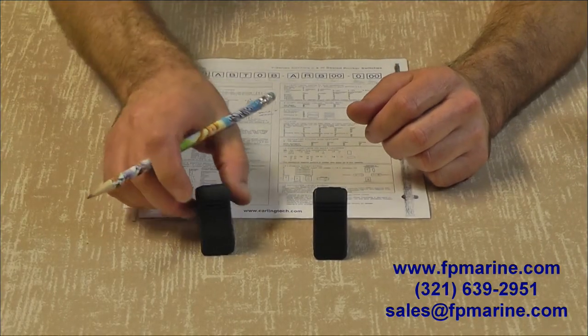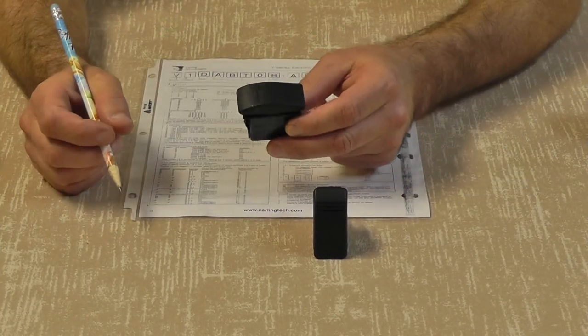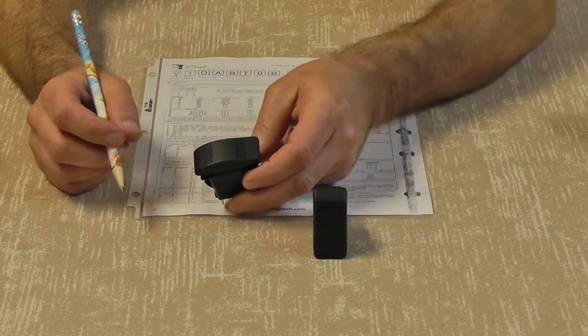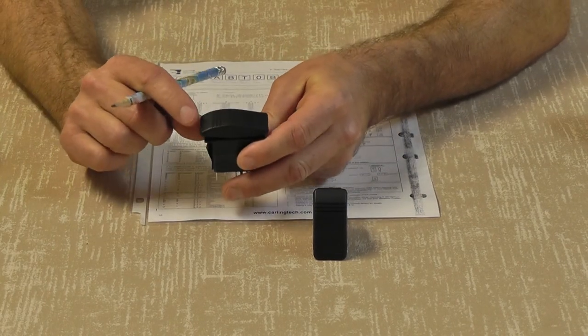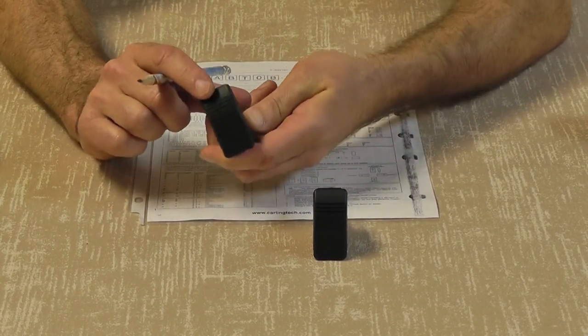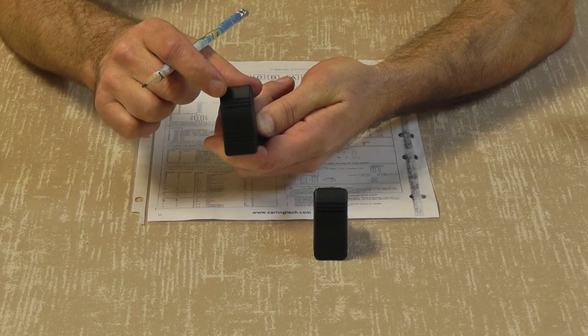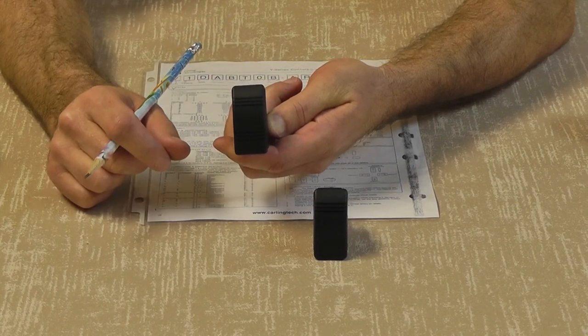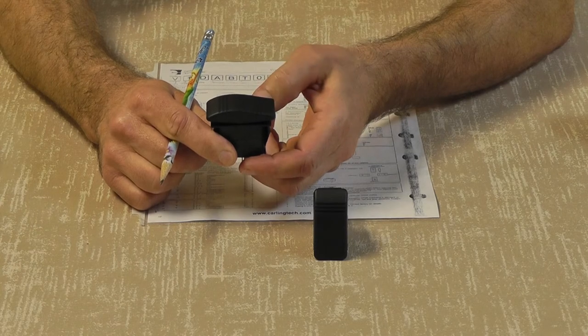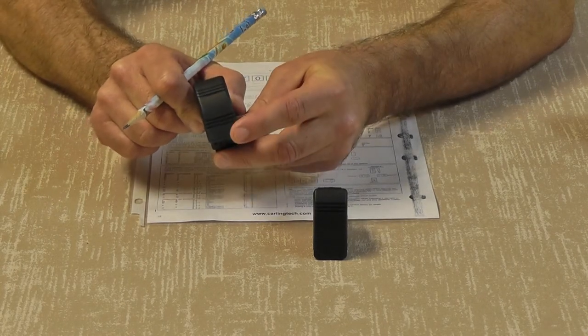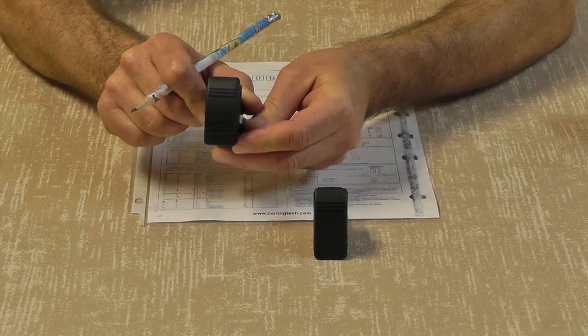Actuator positions is first. This is an on, off, on switch, which will have all three actuator positions. At rest, it's in position number two. Position number one is indicated when the top of the switch is pressed. Actuator position number two is when it's in the center position. Actuator position number three is when the bottom is pressed.